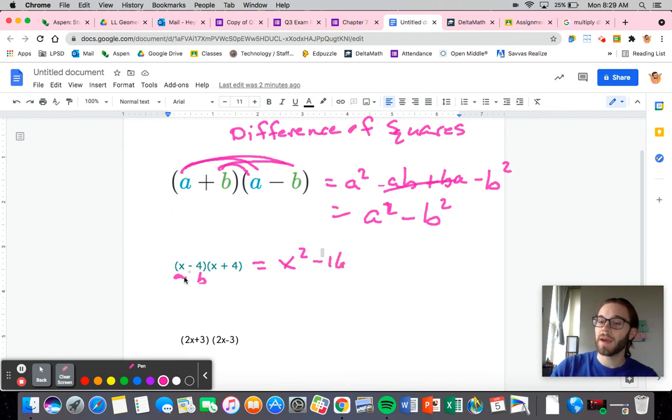All right, you want to confirm that? How can we do that? Well, we can just multiply the same way we would have always multiplied. x times x is x squared, x times 4 is 4x, negative 4x. You can already see these two are going to cancel. And then negative 16. And bam, we're left exactly with that.